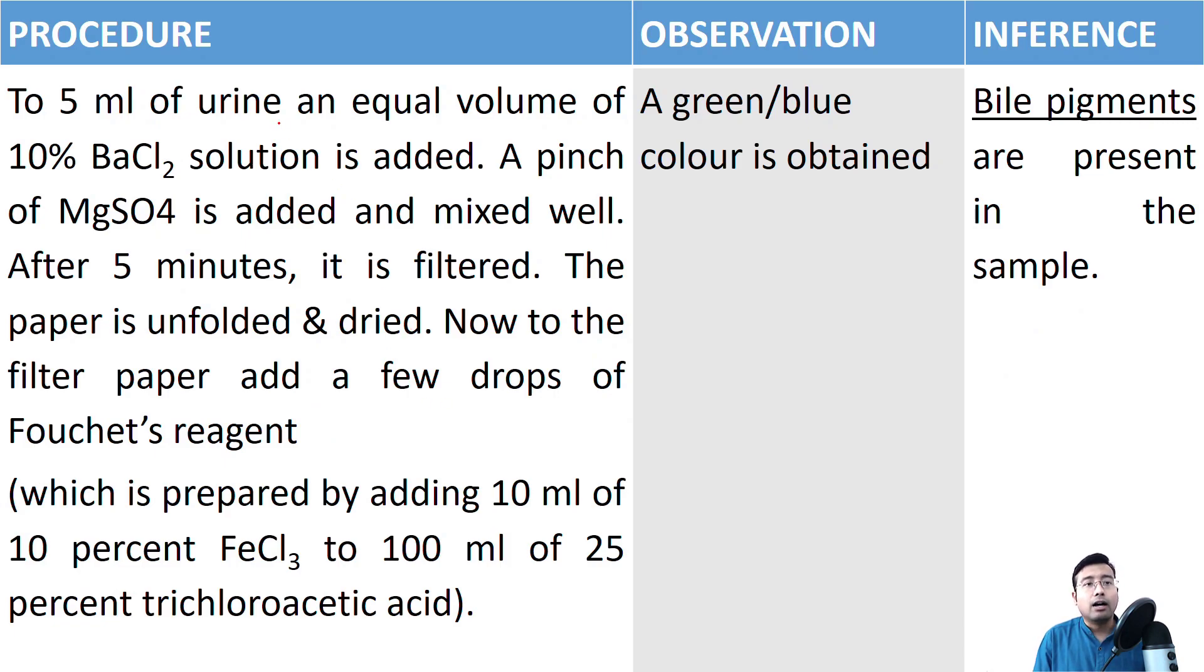Let us look at the procedure which is very time taking and might appear cumbersome to you all. First what we need to do in case of Fouchet's test, 5 ml of urine is taken in the test tube. And to that equal volume of 10 percent barium chloride solution is added. After that the solution is mixed. So you now have 10 ml of a solution of urine and barium chloride. To that, we add a pinch of magnesium sulphate and mix the whole thing again.